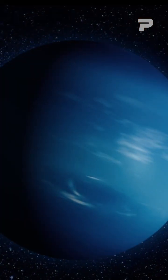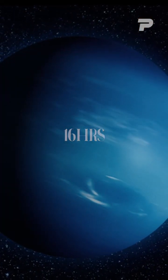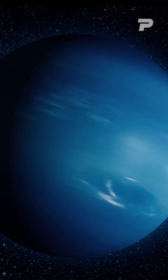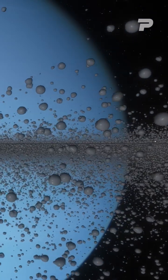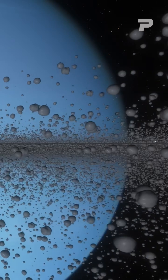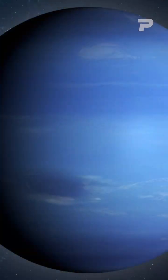One day on Neptune takes about 16 hours and completes an orbit of the Sun in approximately 165 Earth years. Why a planet so far from the Sun, without the sunlight's energy, can have the most extraordinary weather form is still unknown.